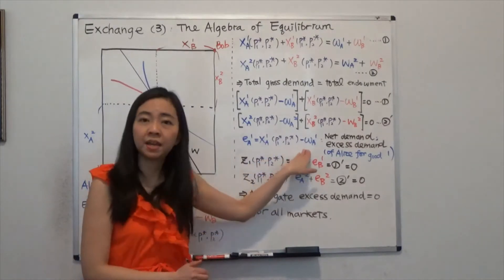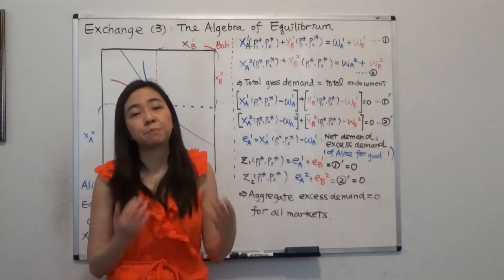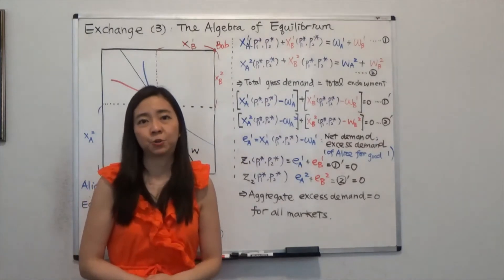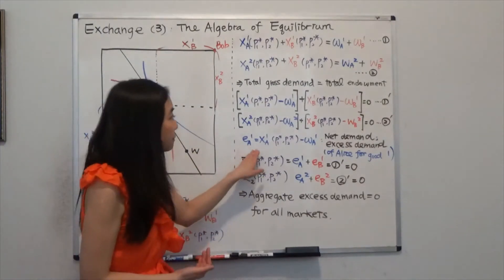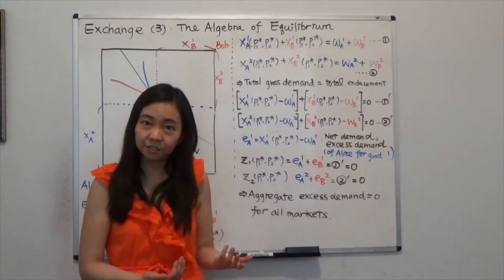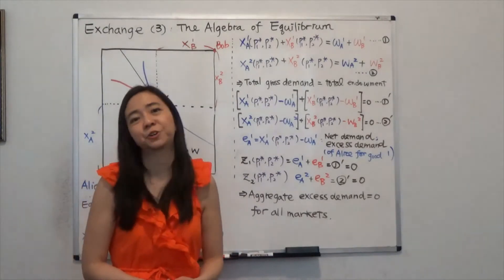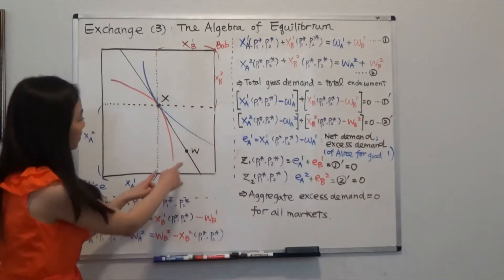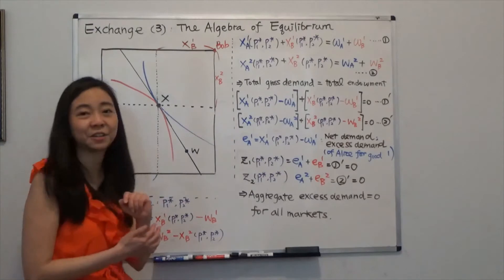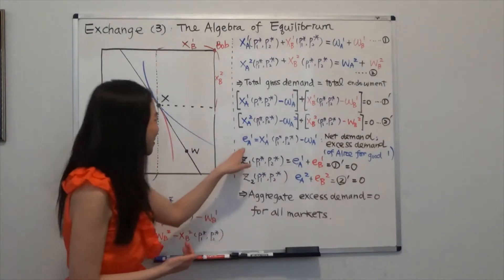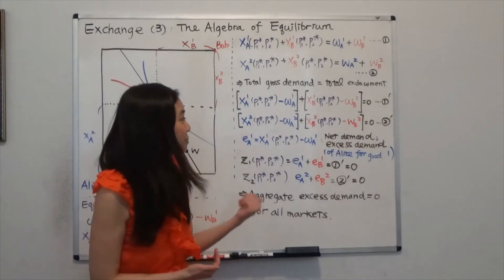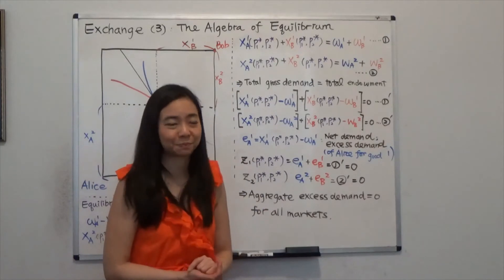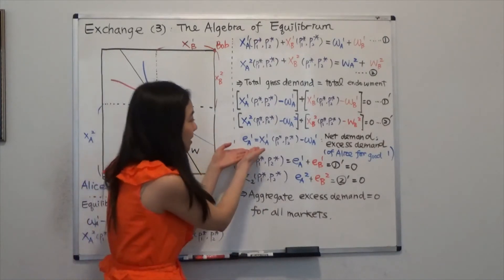Now, if your excess demand is greater than zero, that means you are a net demander of that good. But if your excess demand is negative, that means you are a net supplier of that good. And in our example, you could see that Alice ended up selling good one. So Alice has a negative excess demand for good one. And you can define the same thing for Bob.